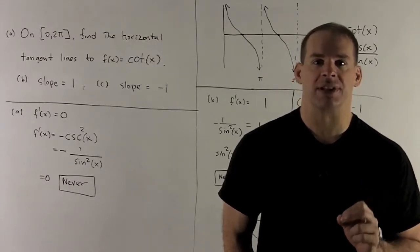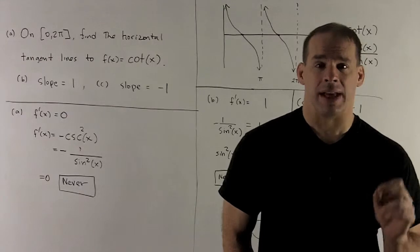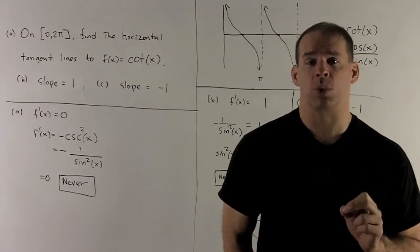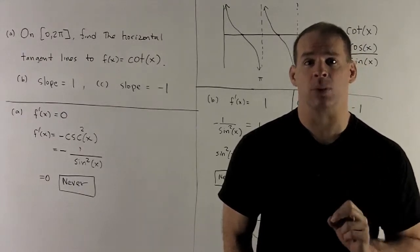So, in this case, we're going to take the derivative of our cotangent. That's going to give me minus cosecant squared of x, and then I'm going to set that equal to 0.